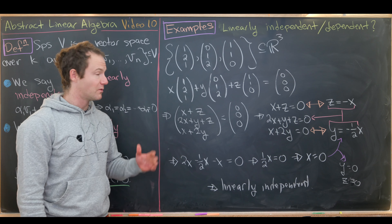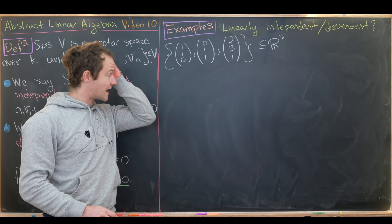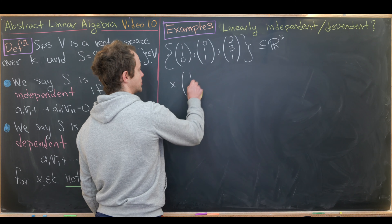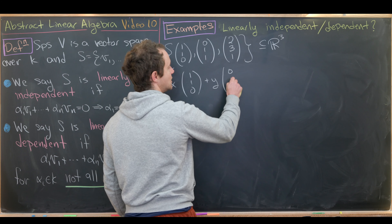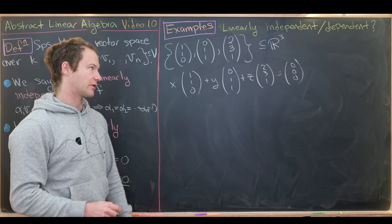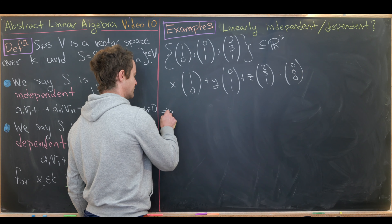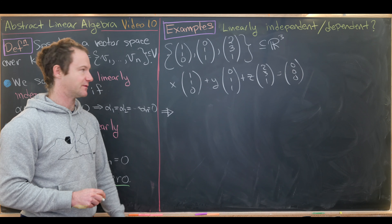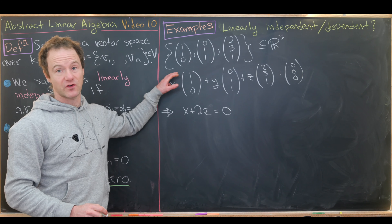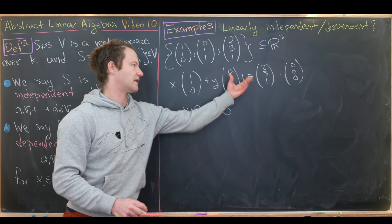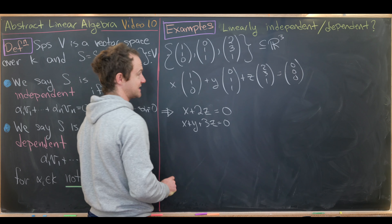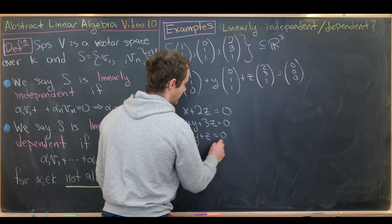For the next example, we have another set of three vectors in R3. We take a linear combination with coefficients x, y, z and set it equal to zero. This gives x + 2z = 0, x + y + 3z = 0, and y + z = 0.